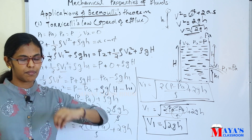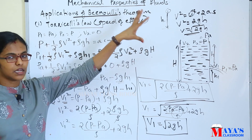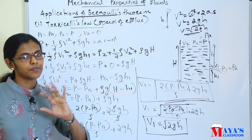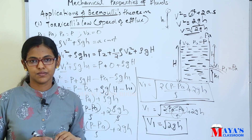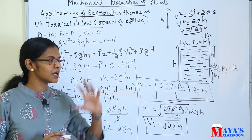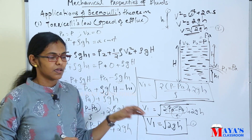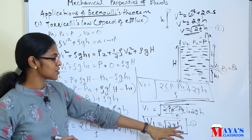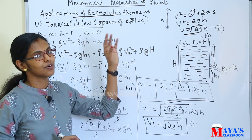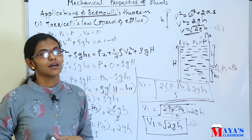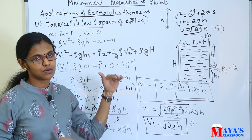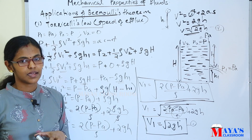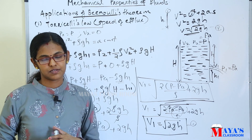This equality is known as Torricelli's theorem. The velocity of efflux of a liquid through an orifice is equal to the velocity acquired by a freely falling body from the free surface of the liquid to the orifice. So the law of efflux, or Torricelli's theorem, gives V equal to root of 2gh.